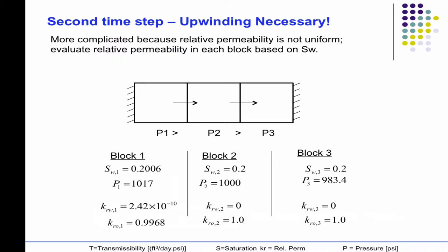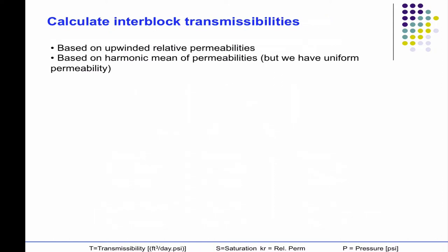In the second step, you have to implement your upwinding scheme. In the first step, there's no fluid flow. Initial conditions, there's no flow. Everything's the same, there's no pressure gradient. Everything's 1,000. So there's no velocity vector to compute. But on the second step, now you have a pressure gradient. You have to compute or use your upwinding scheme for your relative permeabilities.